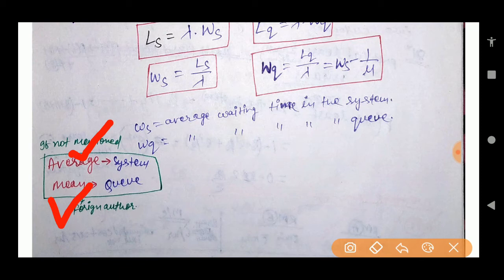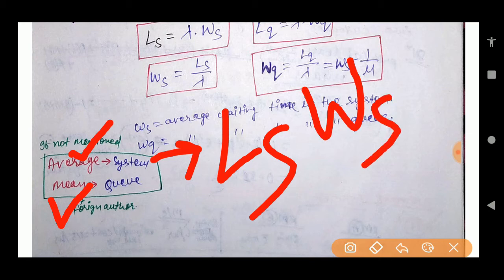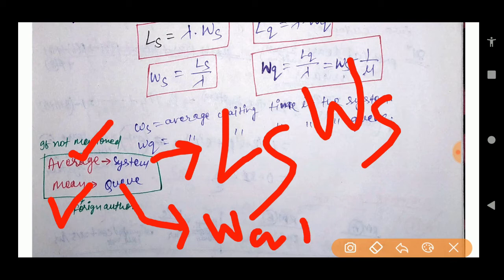To understand the notation: Ls represents the average number of customers in the system, Lq represents customers in the queue, Ws is the mean waiting time in the system, and Wq is the mean waiting time in the queue.